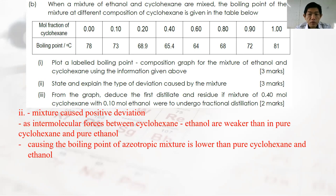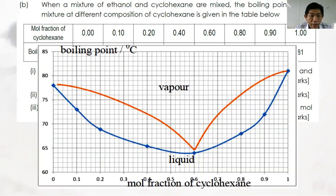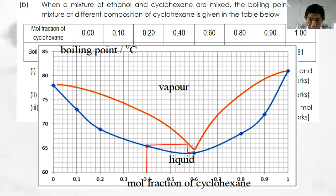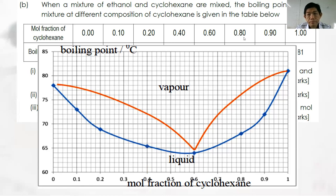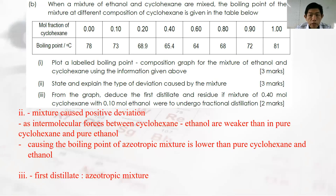Question 2B part 3: Deduce the first distillate and residue when a mixture of 0.4 mole fraction cyclohexane undergoes fractional distillation twice. Starting at 0.4 cyclohexane on the graph, trace upward to the vapor curve, then condense and repeat. The first distillate will be the azeotropic mixture. As cyclohexane is removed, the residue becomes progressively richer in ethanol, so the residue is pure ethanol.